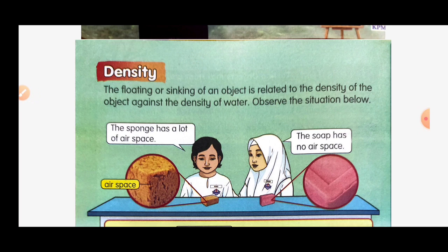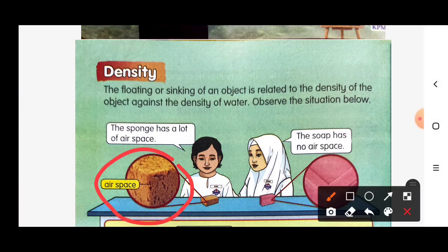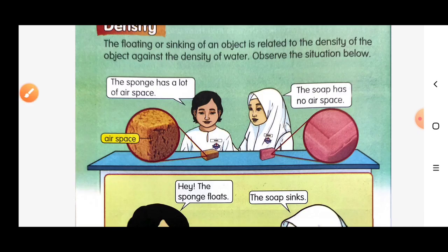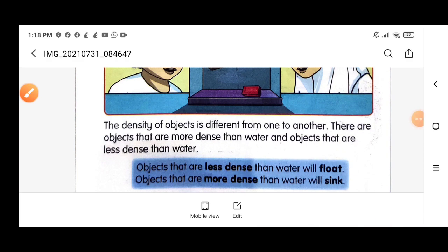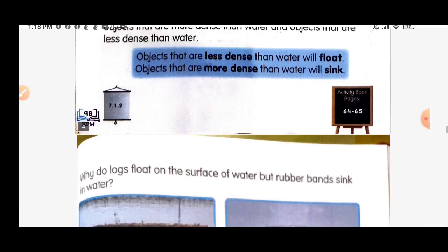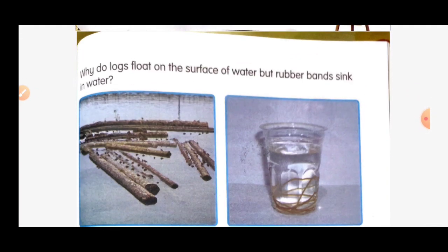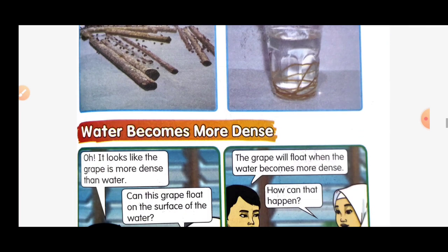This sponge has a lot of air space, while the soap has no air space. So the sponge floats and the soap sinks. The density of an object differs from one to another. There are objects that are more dense than water and objects that are less dense than water. Objects that are less dense than water will float; objects that are more dense than water will sink.